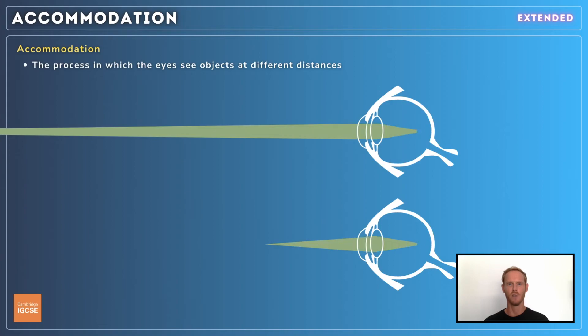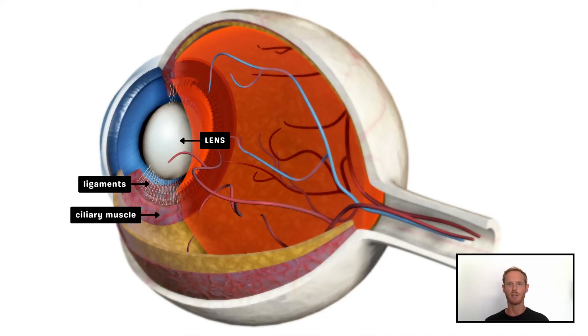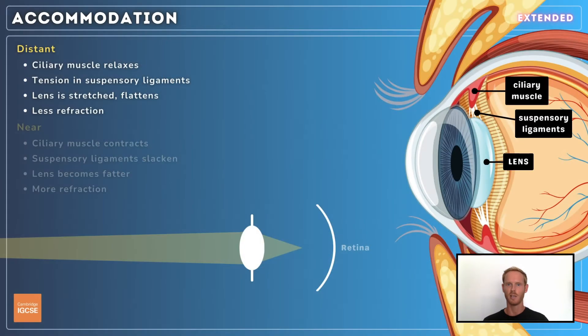The eye's ability to adjust its focus on objects that are near or far is known as accommodation. The lens is held in place by suspensory ligaments that are connected to a circular band of muscle called the ciliary muscle. When focusing on a distant object, the ciliary muscle relaxes and widens, pulling on the suspensory ligaments. This stretches and flattens the flexible lens, reducing the angle of refraction. The eye is now accommodated for distant vision.